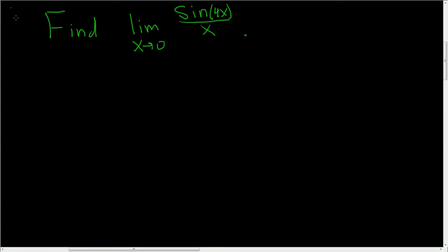We have to find the limit as x approaches 0 of sine of 4x over x. What we're supposed to do here is use the fact that the limit as x approaches 0 of sine x over x is equal to 1. This is what we will use to compute this limit.